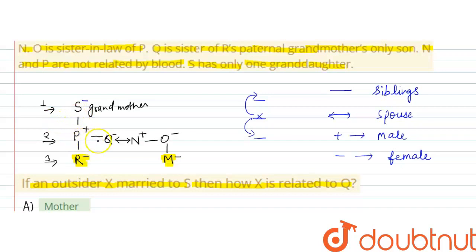Q jo hai P ki sister hai. P agar son hai, to Q daughter hogi. Agar outsider X marry karta hai S se, to yahan par X male hoga. Q ka relation agar hum dekhe X se - S ka husband X hai, to yahan par X jo hai father hoga Q ka.